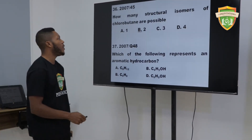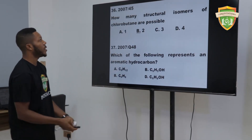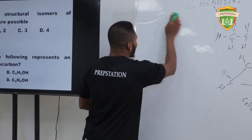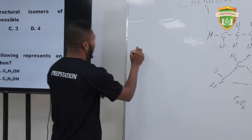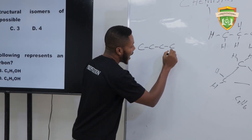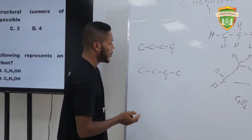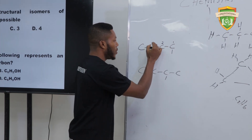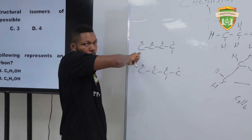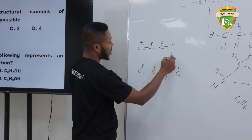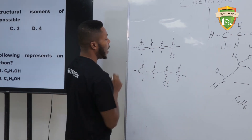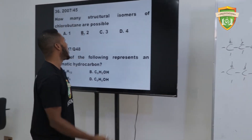How many structural isomers of chlorobutene are possible? Don't just guess — pick paper and draw the structures. Butene has four carbon atoms. Chloro can be at carbon one or carbon two — if you start from either end, it will still be carbon one or two. So there are two possible isomers: 1-chlorobutene and 2-chlorobutene. The answer is two.